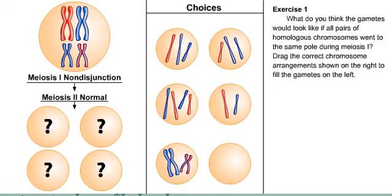What do you think the gametes would look like if all pairs of homologous chromosomes went to the same pole during meiosis I? Drag the correct chromosome arrangement shown on the right to fill the gametes on the left.